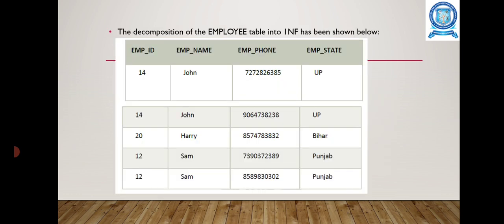The table has employee ID, employee name, employee phone number, and employee state. The employee John, who had multiple phone numbers, now has one row per phone number — one phone number per row. This decomposition of the employee table brings it into 1st Normal Form.